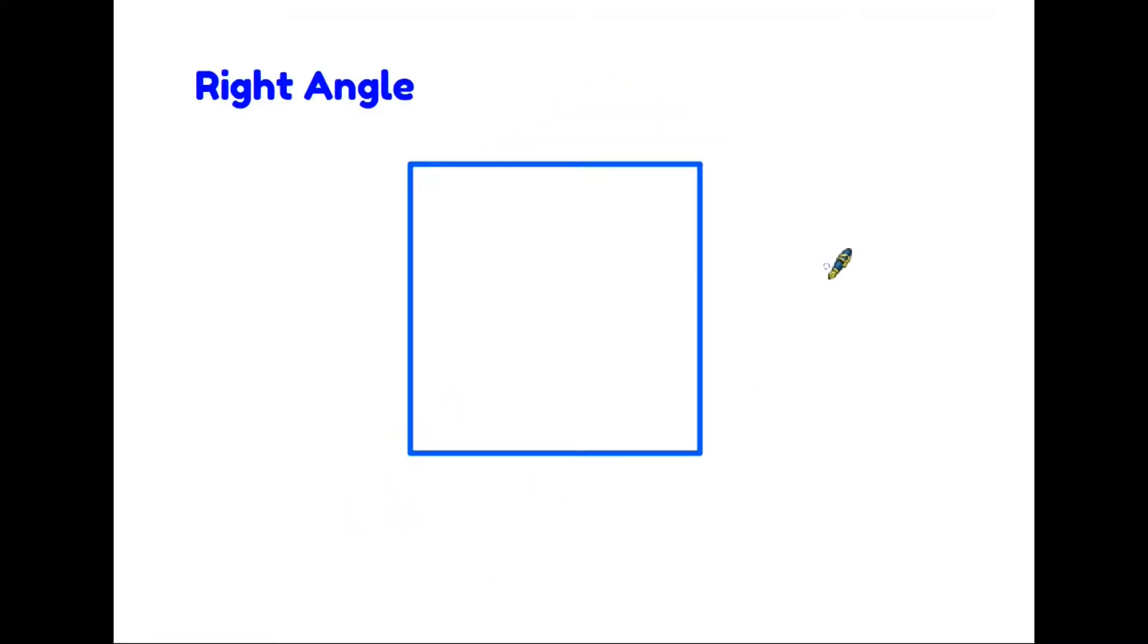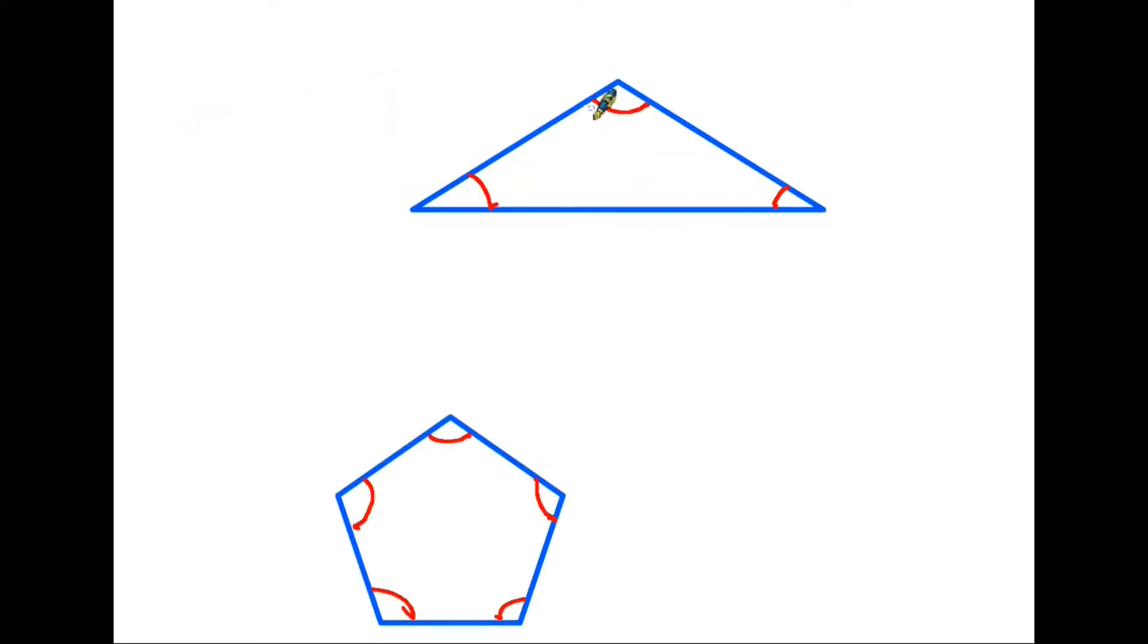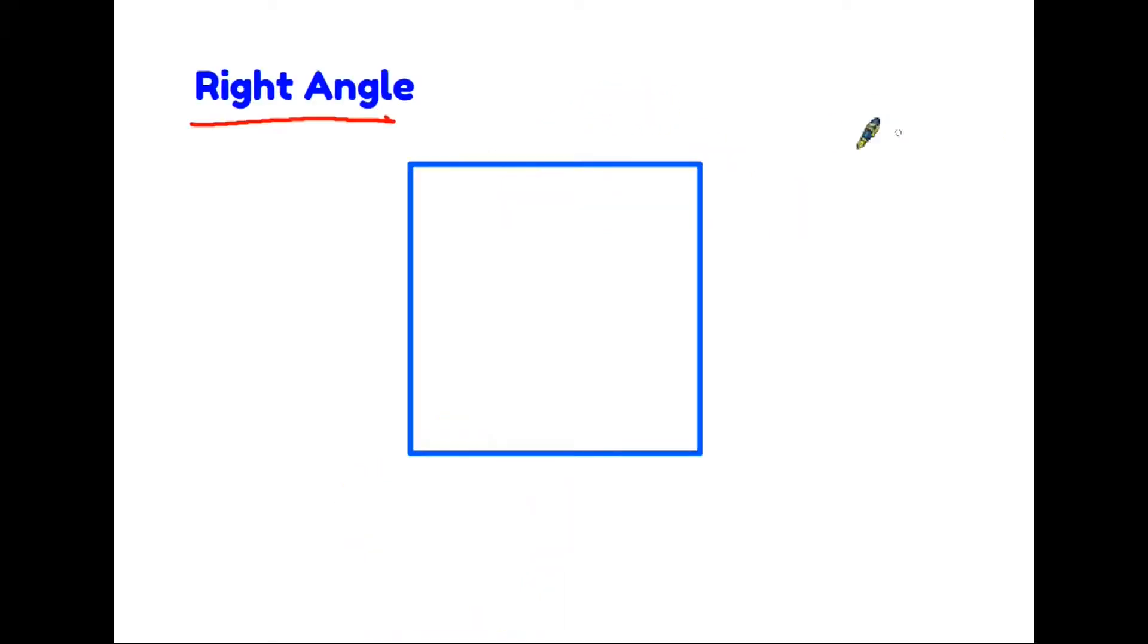There is one special angle that we need to look out for and it's called a right angle, and we find it here on the corner of a square. In fact, a right angle is an angle that would make up part of a square. Now you'll notice on previous pages that when I filled in an angle I did it with a circular line. The easy way to spot a right angle is that we do not put a circular line, we fill it in with a little square. That's a right angle.